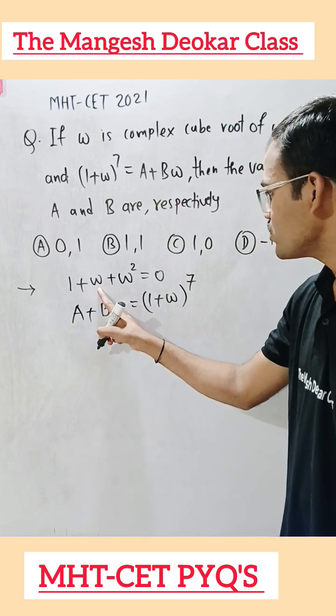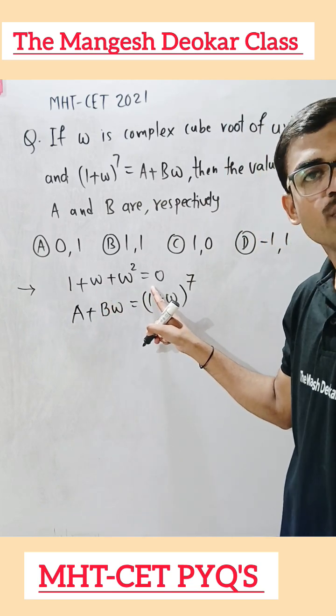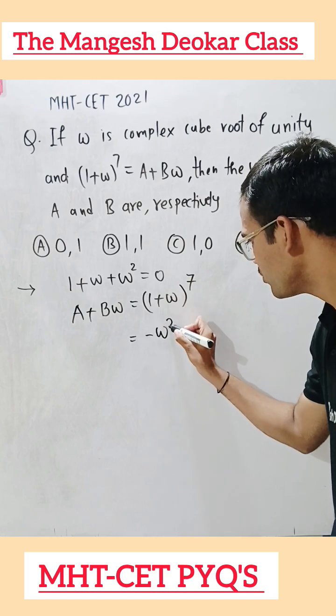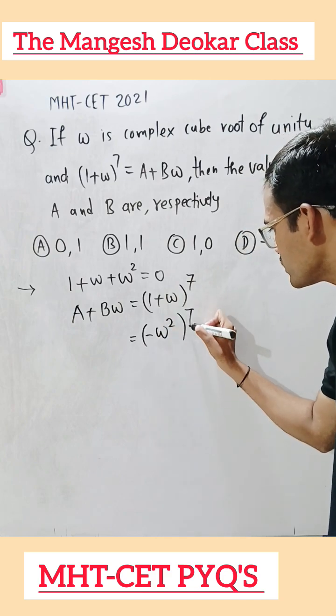From this equation, 1 + ω = -ω². So we will replace (1 + ω) by (-ω²)^7.